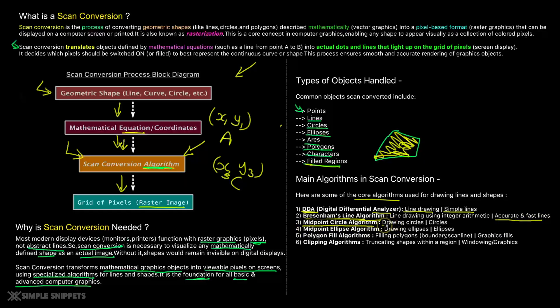We also have midpoint circle algorithm. And as the name suggests, it is used for drawing circles. We have midpoint ellipse algorithm used for drawing ellipses. We have polygon fill algorithms, which basically take a particular closed space and you can add a particular color inside it using this algorithm.